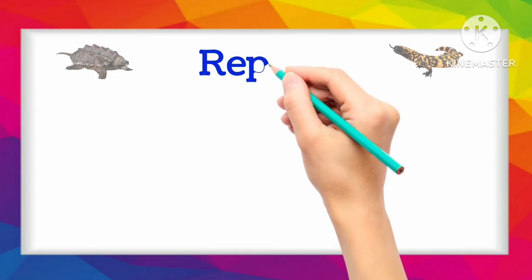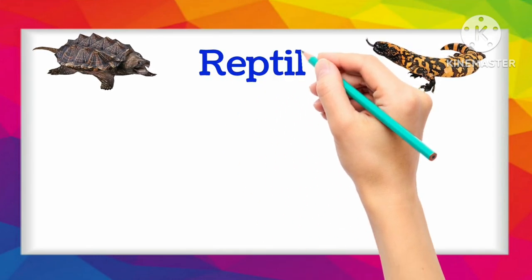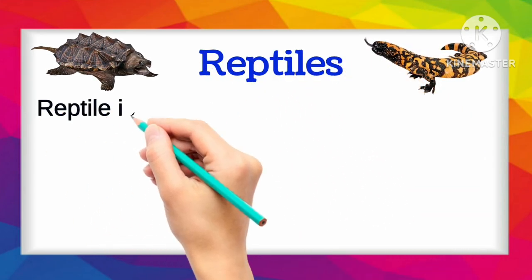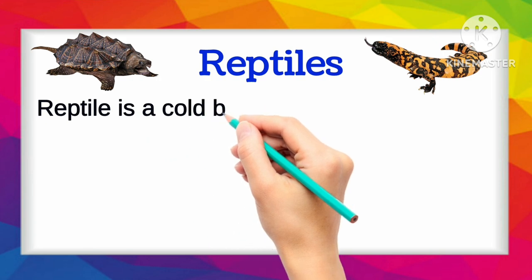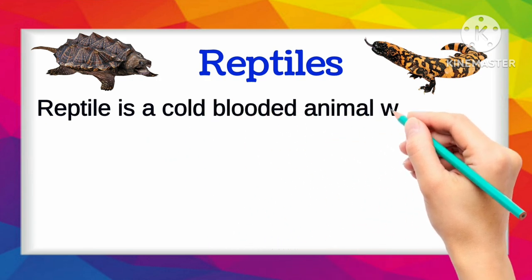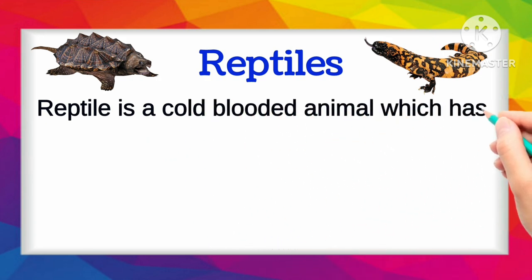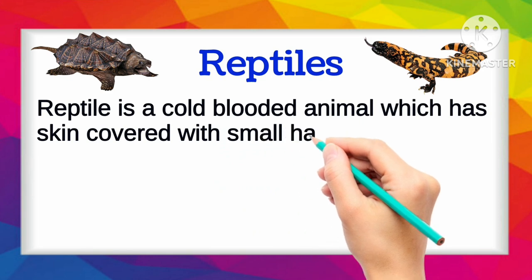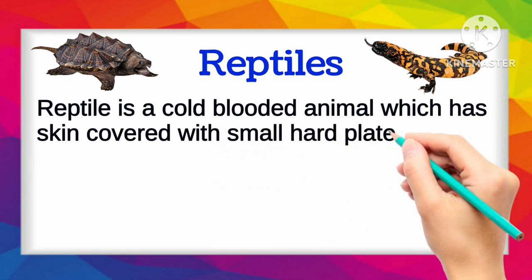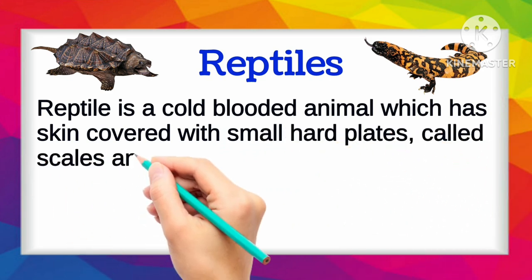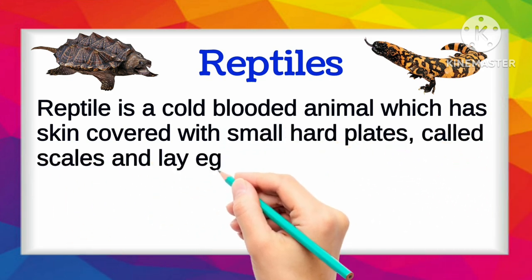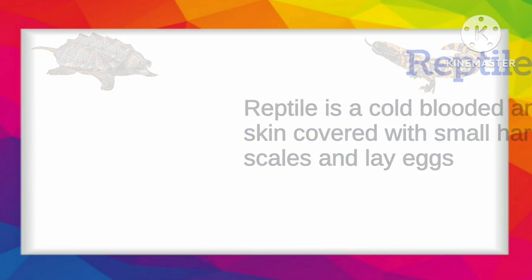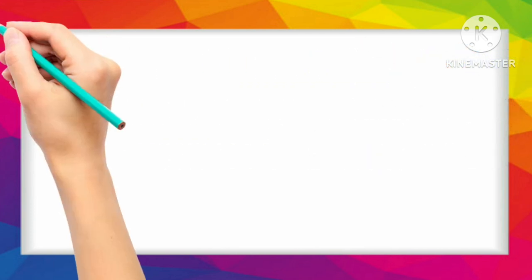Hello Kids! Let's see Reptiles. Reptile is a cold-blooded animal which has skin covered with small hard plates called scales and lays eggs. Let's see the examples of reptiles.